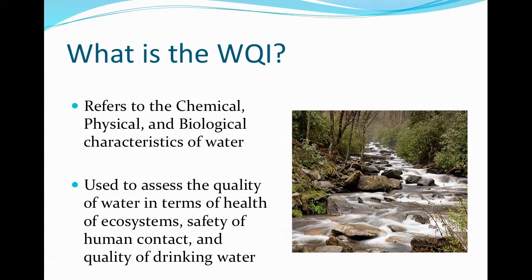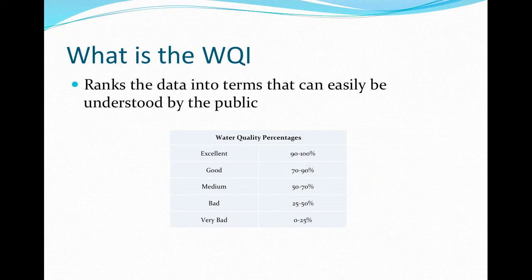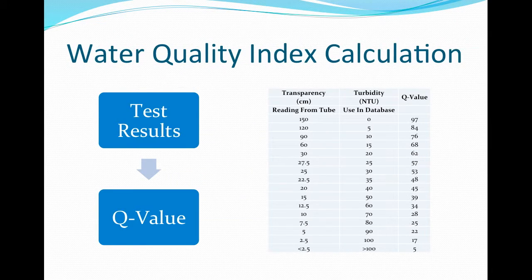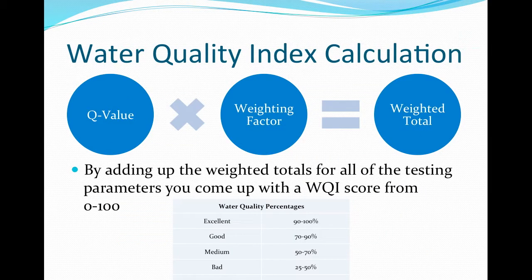The Water Quality Index incorporates chemical, physical, and biological characteristics of water. It is used to assess the quality of water in terms of health of the ecosystem, safety of human contact, and the quality of drinking water. The WQI weighs the various measured parameters and assigns a score to the waterway that is easily understood by everyone, regardless of background. To calculate the WQI score, take the result of one of your measured parameters and use the tables to find the corresponding Q value. For instance, if we had a transparency of 25 centimeters, our Q value would be 53. Multiply the Q value by the weighting factor for that parameter. Once the weighted Q values for each measured parameter are calculated, add the values together. The sum should be 0 to 100, indicating the quality of the water body tested.